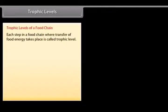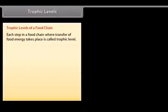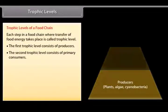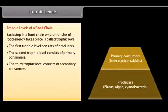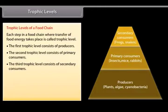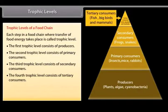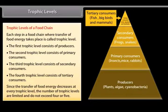Trophic level: Each step in a food chain where transfer of food energy takes place is called a trophic level. The first trophic level consists of producers. The second trophic level consists of primary consumers. The third trophic level consists of secondary consumers. The fourth trophic level consists of tertiary consumers. Since the transfer of food energy decreases at every trophic level, the number of trophic levels is limited and does not exceed 4 or 5.